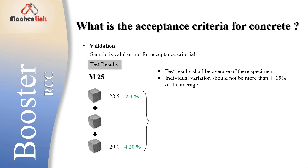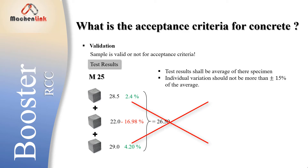On the other hand, let's say the compressive strength of one of the samples is 22 MPa, then the average of all three will be 26.50 MPa. If we calculate the individual variation, then for that specimen it comes out to be minus 16.98%, which is more than 15%. Hence, this sample is not valid for acceptance criteria.